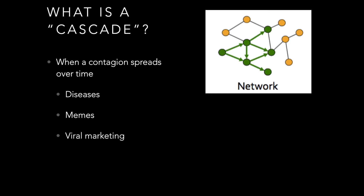Other examples include viral marketing — how information spreads both on and offline — the goal of many marketing campaigns, power overload, where propagation of a power failure in one transfer substation propagates to other substations causing a large-scale blackout, or traffic congestion, where congestion in one small part of the network has a cascade effect that causes congestion further down the line.